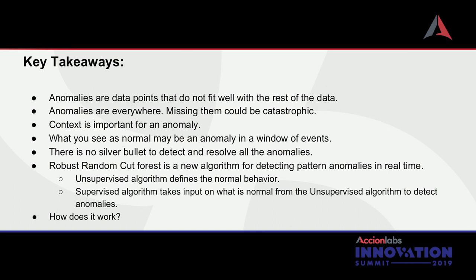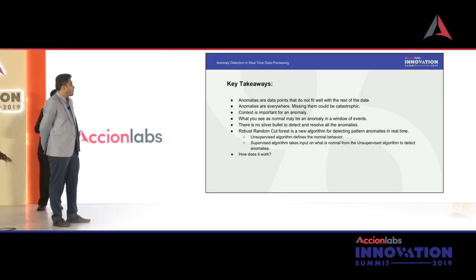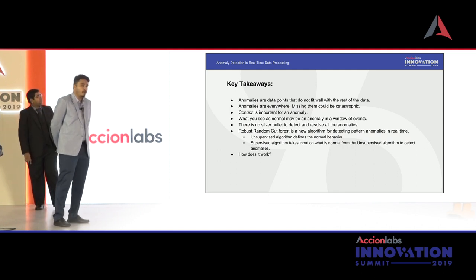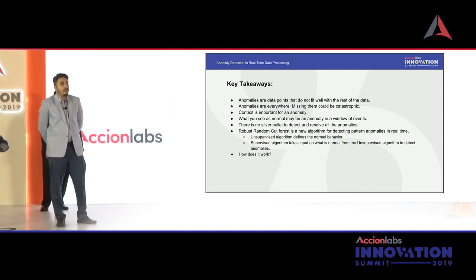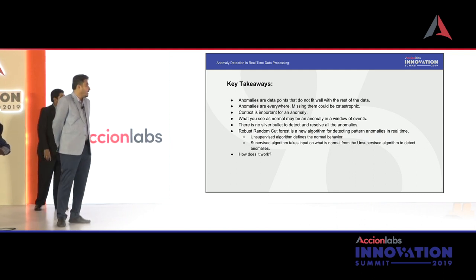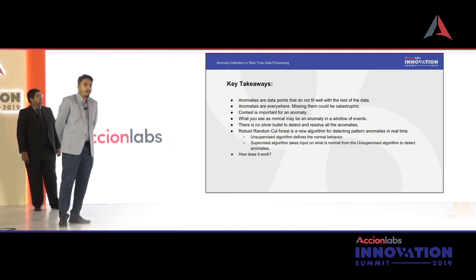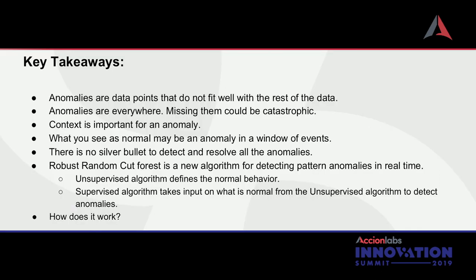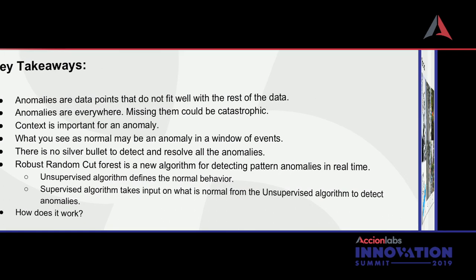There is no silver bullet to detect and solve all anomalies. Robust Random Cut Forest is a new algorithm for detecting pattern anomalies in real time. It uses both unsupervised learning as well as supervised learning. Unsupervised learning defines the normal behavior and sets the parameters and patterns for the algorithm, which then detects what is normal, what is not, and what is an anomaly.